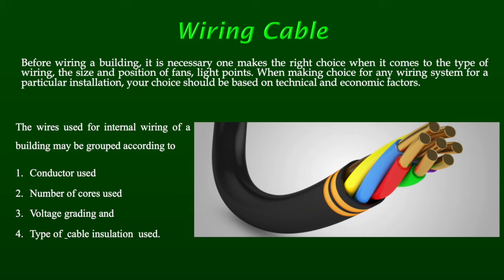Apart from current capacity, other parameters for choosing cable wire include the quality of the insulator, which is very important in domestic applications for safety reasons. The type of conductor material also matters — whether copper or aluminum. Copper wire is a very good conductor but costs more compared to aluminum. Nowadays, in household wiring, copper wires are used in most cases, though aluminum wires may be used in some lighting applications.